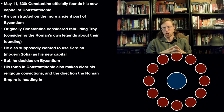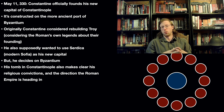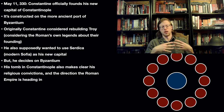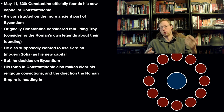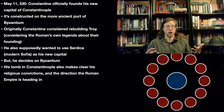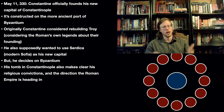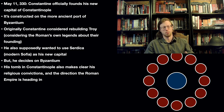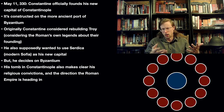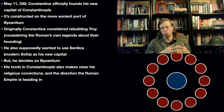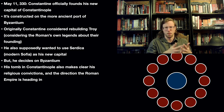Welcome back. This is part two of our discussion of Theodoric and Justinian's conquest of the former Western Roman Empire in the 500s. In the last video, we talked about Theodoric and how he established a kingdom in Italy, and what some of the source problems are in working with those topics.